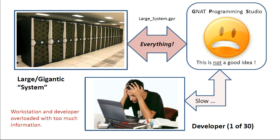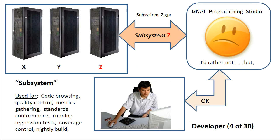For large systems, however, the previous scenario does not work due to information overload. It is simply not practical from the perspective of workstation performance, or the ability of a developer to face millions of lines of code all at once. The solution, if you want to use the GANAP development environment with a large system, is to break the problem down into manageable parts, starting at the subsystem level as shown here.